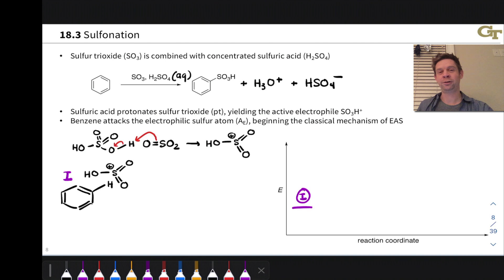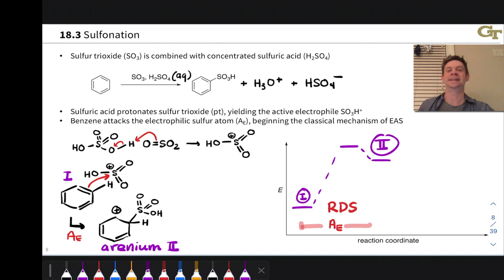So to kick us into the prototypical canonical mechanism of electrophilic aromatic substitution, that active electrophile coordinates to the aromatic ring through an SE elementary step, with the pi electrons in the aromatic as the nucleophile and sulfur as the electrophilic atom. This produces an arenium ion containing a new carbon-sulfur bond.